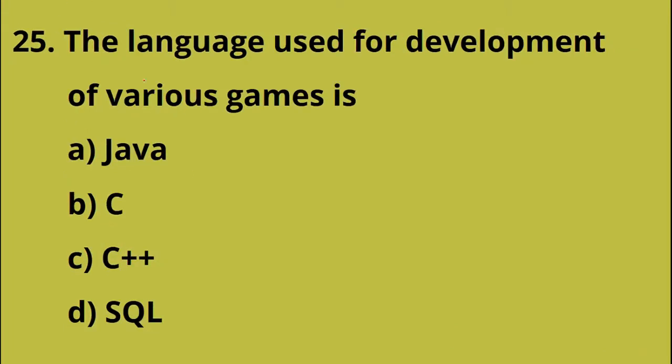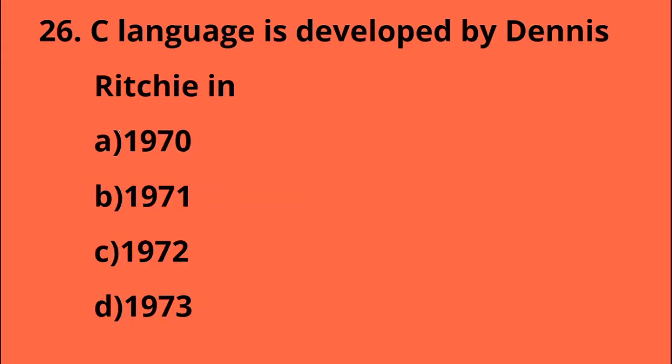The language used for development of various games — Option A, Java. Next question: The C language was developed by Dennis Ritchie in 1972. Option C is the answer.